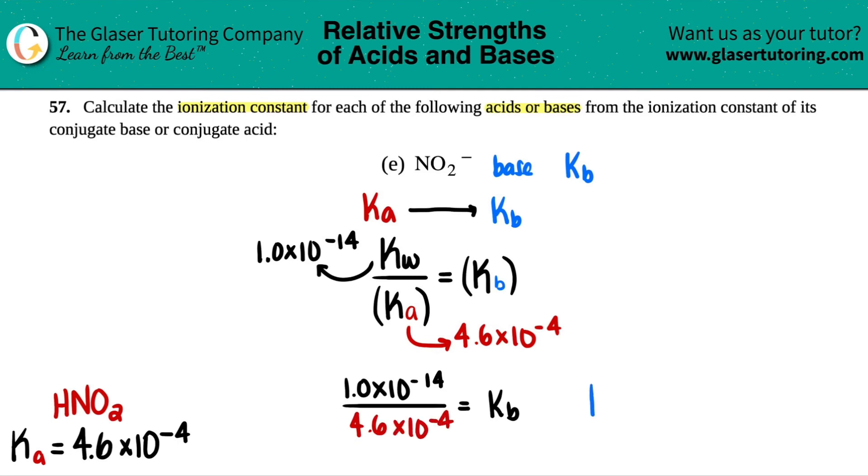1.0 times 10 to the negative 14th divided by 4.6 times 10 to the negative 4th. Let's find out what that Kb is. So we get 1 times 10 to the negative 14th divided by 4.6 times 10 to the negative 4th. 2 sig figs. 2.2 if we round. 2.2 times 10 to the negative 11th. So 2.2 times 10 to the negative 11th.